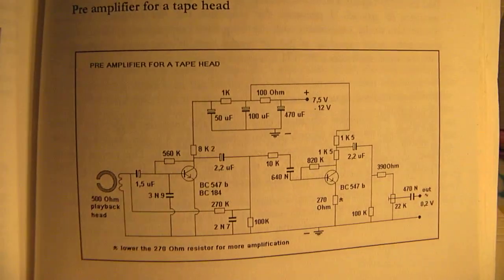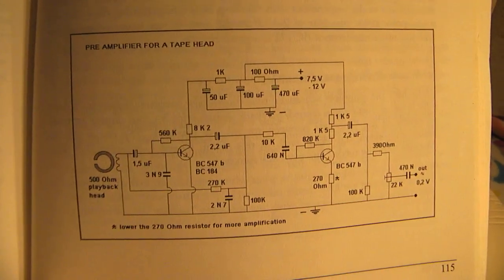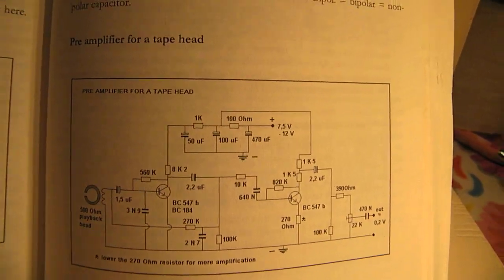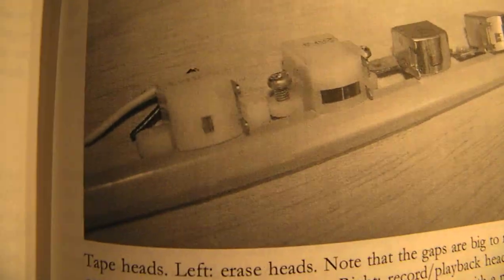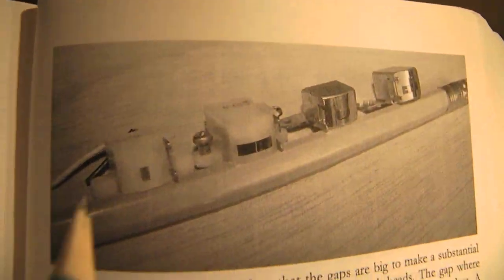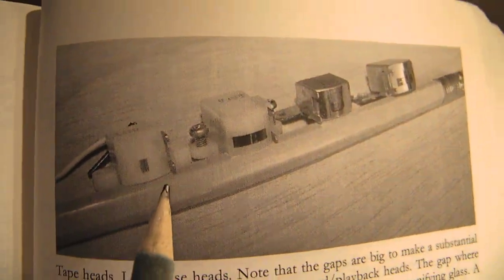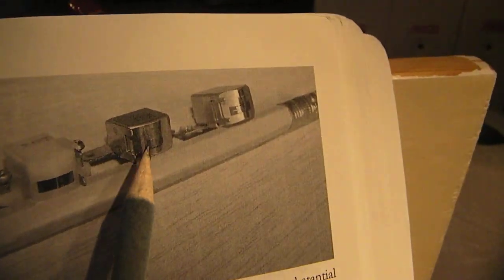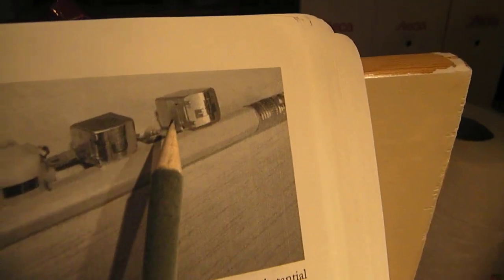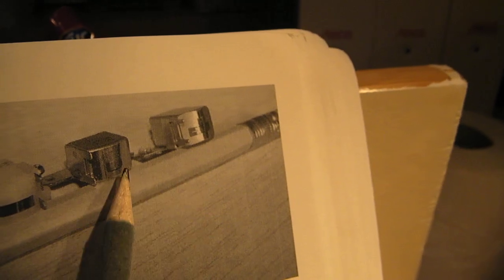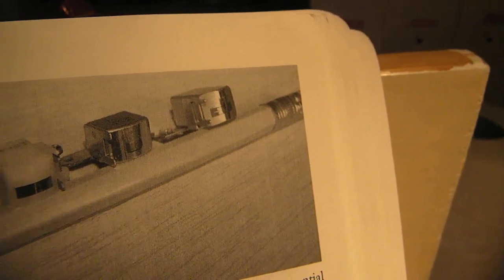It was originally from Philips and you see for instance a few tape heads: erase head, also an erase head and a record, two record heads. I think this is stereo and this is mono.